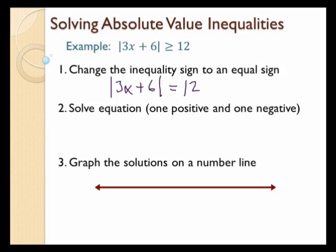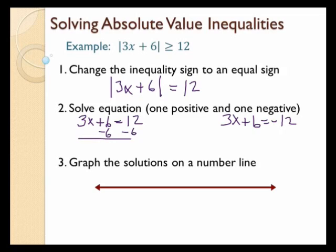Step number two: solve the equation like an absolute value equation. I'm going to isolate the absolute value, make my two equations, and solve each one. This one's already isolated, so I can start by making my two equations: 3x plus 6 equals 12, and 3x plus 6 equals negative 12. Subtracting 6 from both sides gives 3x equals 6, so x equals 2.